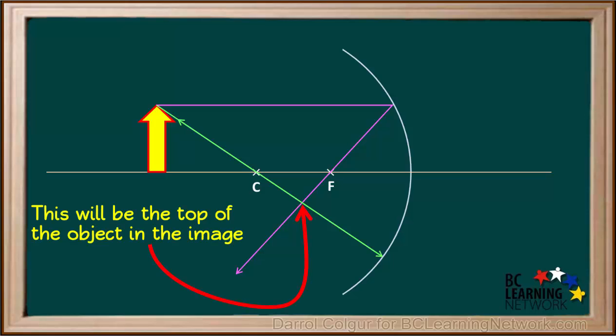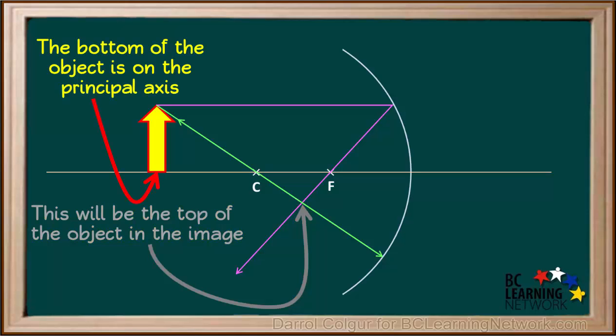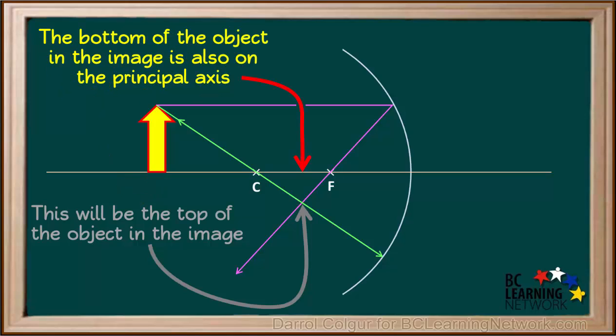The point where these two reflected rays from the top of the object cross will be the top of the object in the image. Remember the bottom of the object is sitting on the principal axis, so the bottom of the object in the image will also touch the principal axis, here at a point directly above the top of the object. Now that we know where the bottom and the top of the image will be, we can draw the image in.